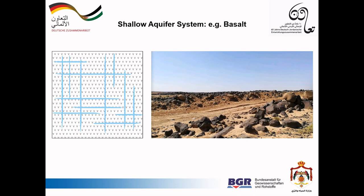An example of the shallow aquifer system is the basalt in the northeast of Jordan between Mafraq and Azraq. In this aquifer, water flows through cracks and fractures between the rocks.